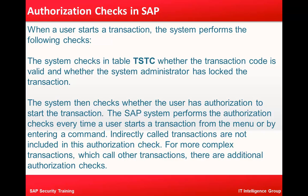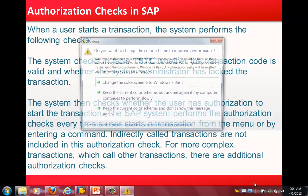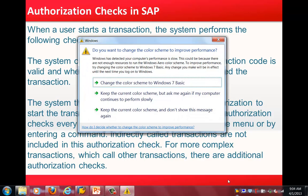So the system goes into the table called TSTC to find out whether the T-code is valid or not. If the T-code is valid, it then checks whether it is locked or not. After that, the system checks whether the user has the authorization to start the transaction — it goes into PFCG and checks whether the roles required to perform that particular transaction are assigned to the user.